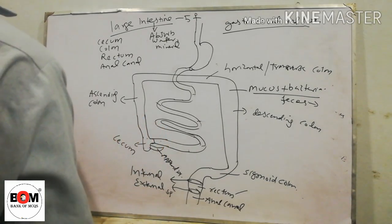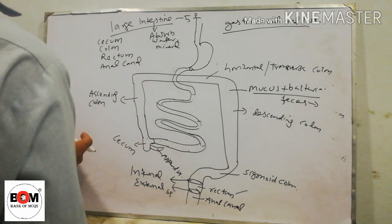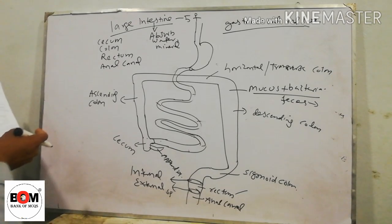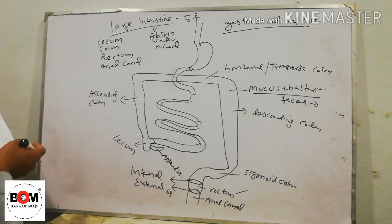So the large intestine has four parts: cecum, colon, rectum, and anal canal.